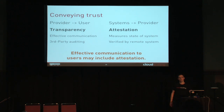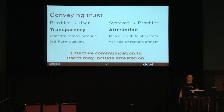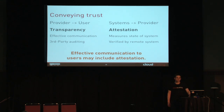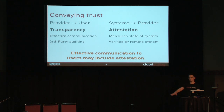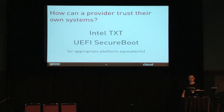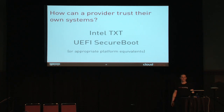For the provider to the user, you need transparency, effective communication, and third-party auditing — cloud audit kind of fits in there potentially. Effective communication to users may also include attestation. To do any of that for the user, we need as a provider — as someone building and deploying a cloud — to actually trust the systems we've built and designed. We can do that through TXT and through UEFI secure boot, or whatever is used on ARM or AMD.